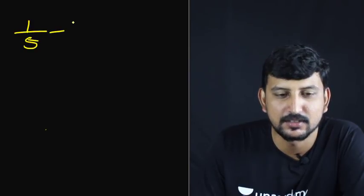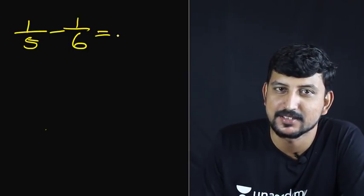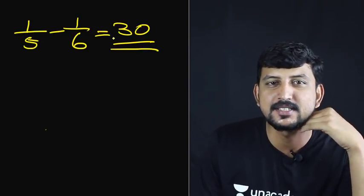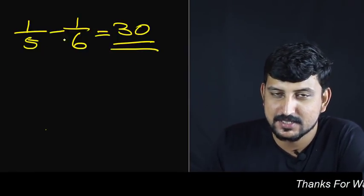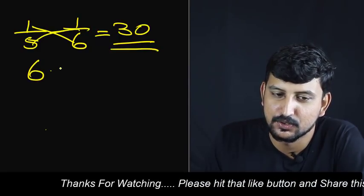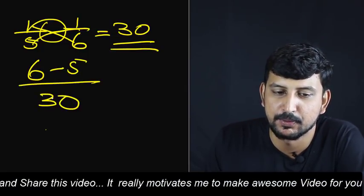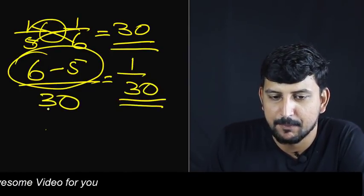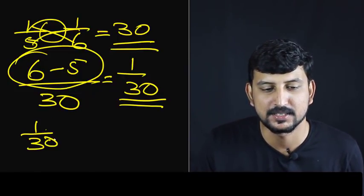We have 1 by 5th, then 1 by 6, minus 1 by 6. Now we have 1×5 minus 1×6. So you now have to cross multiply: 1×6 is 6, here it is minus 5. So 1×5 divided by 30. That gives us 1×30, and 1×30 means 30.